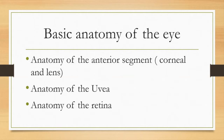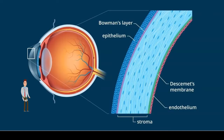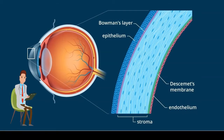Now we will talk about anatomy of the anterior segment: cornea and lens, sclera, anatomy of the uvea, and anatomy of the retina. The cornea and sclera form the fibrous layer of the eye, followed by the vascular layer, which includes the ciliary body, along with the retina and the endothelium covering the ciliary body.